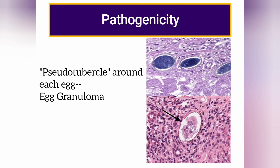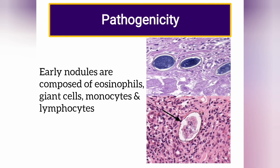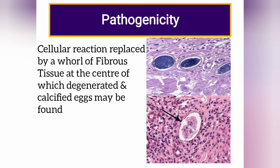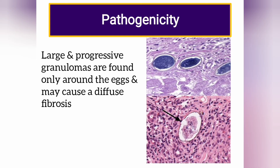The tissue reaction in these cases is known as the formation of a pseudotubercle around each egg, also known as egg granuloma. The early nodules are highly cellular, composed of eosinophils, giant cells, monocytes, and lymphocytes. Later, the cellular reaction tends to disappear and is replaced by fibrous tissue, with degenerated and calcified eggs found at the center. Large progressive granulomas may cause diffuse fibrosis.